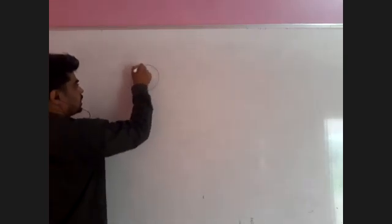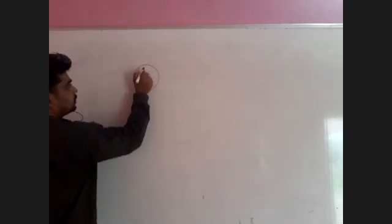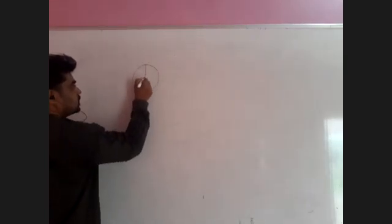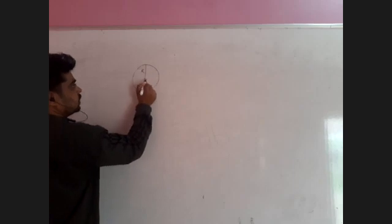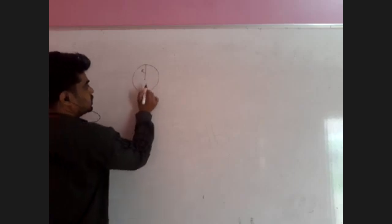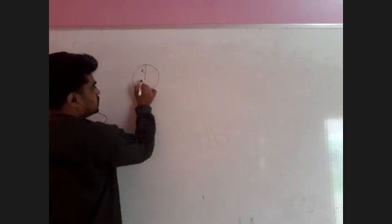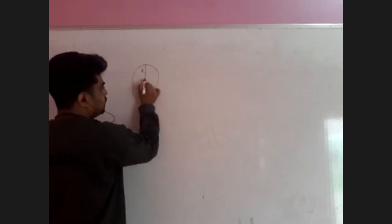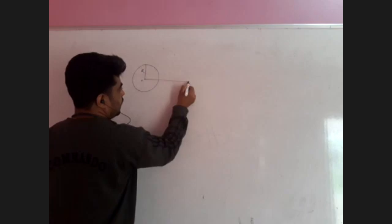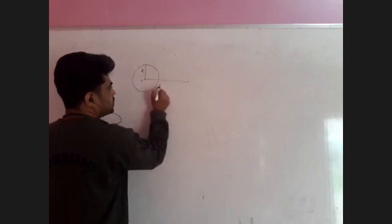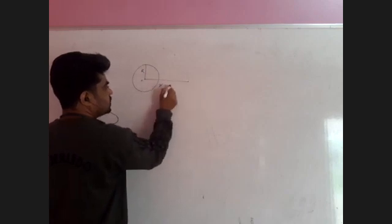This is the circular current-carrying conductor. This is the radius. And taking from the center, a point x is equal to 4 cm is located on the axis.